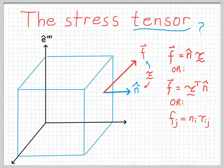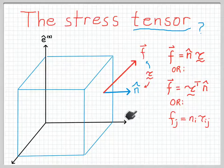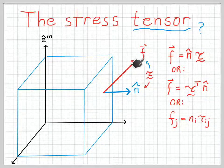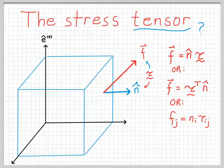What I want to address here is a somewhat pickier topic, which is the fact that just because we call the stress tensor a tensor doesn't automatically make it a tensor. In order to be a tensor, the relationship between the inclination of the face and the force acting on it that the stress tensor describes has to be valid in every reference frame.